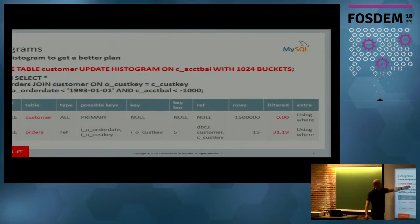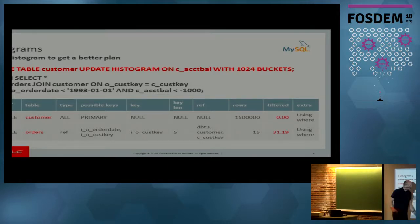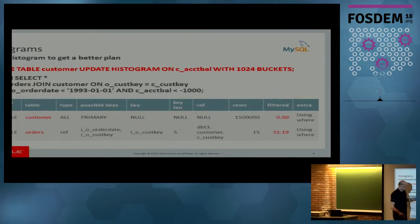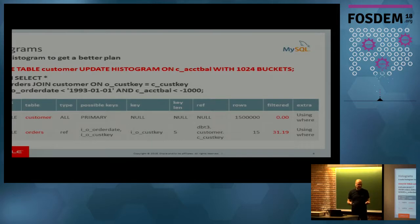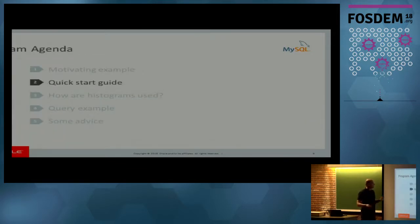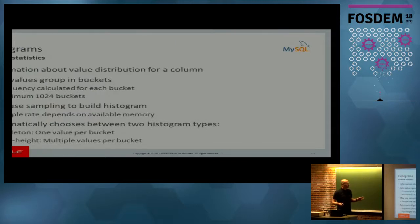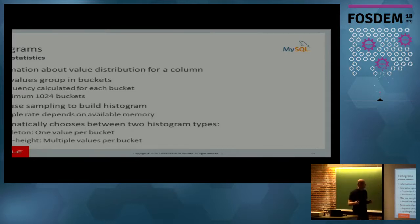What I can do is create a histogram using this syntax on this column. After that, you see that now it picks the correct join order with no join hint forcing it. It picks it by itself because now it knows the filtering here is 0%. This shows why histograms are a useful addition when you don't have other statistics on your columns. A quick start guide: histograms are statistics on columns — the distribution of values — grouped into buckets, with a maximum of 1,024 buckets.